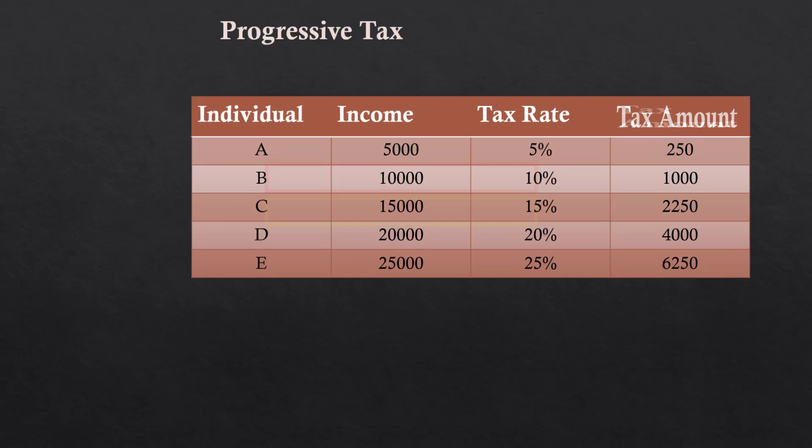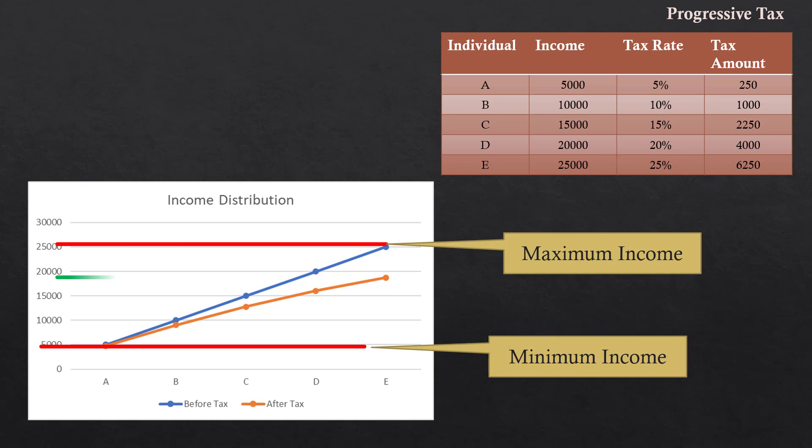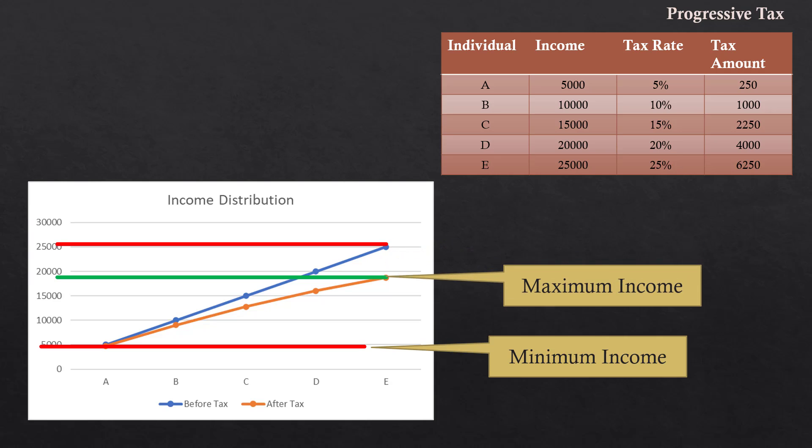Let us see what happens to inequality in income after tax. In this graph also, the blue color line shows income distribution before tax. Orange color line shows income distribution after tax. The disparity in income distribution after tax is reduced to a marked extent.